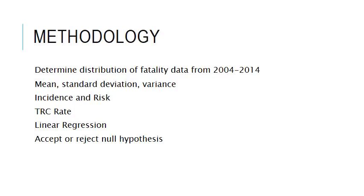The methods of data analysis used for this study are as follows. First, the distribution of fatality data was determined. The mean, standard deviation, and variance were also determined using methods based on whether the data is normally or log-normally distributed. Incidence and risk were also calculated, along with the total recordable case rate. Linear regression statistics were used to determine the statistical significance of the data and determine whether the null hypothesis would be accepted or rejected.